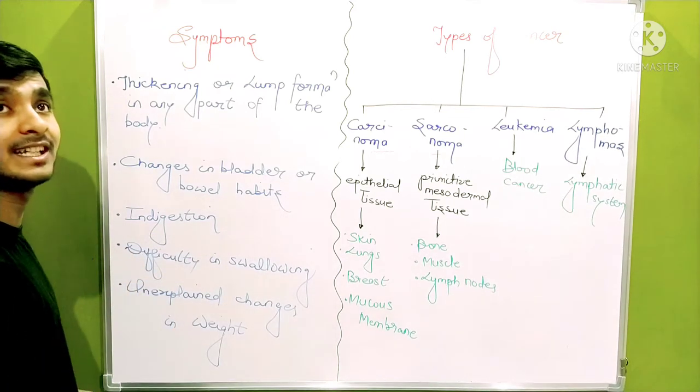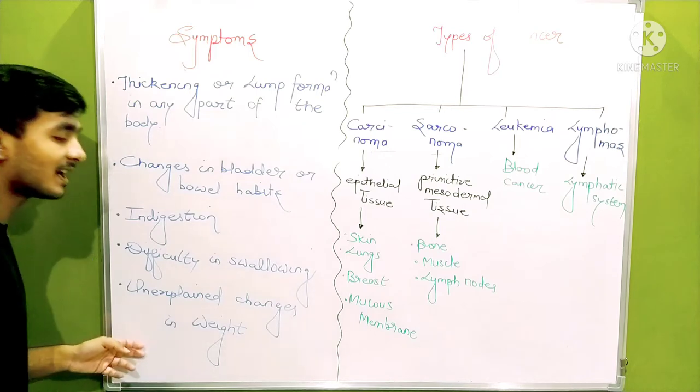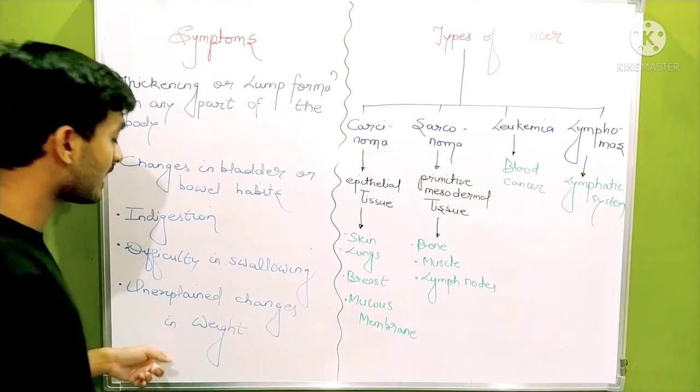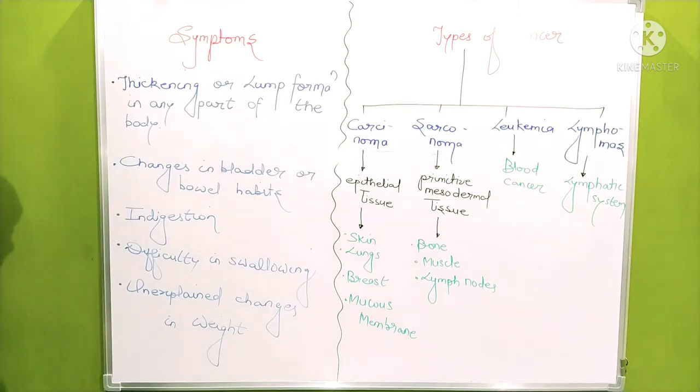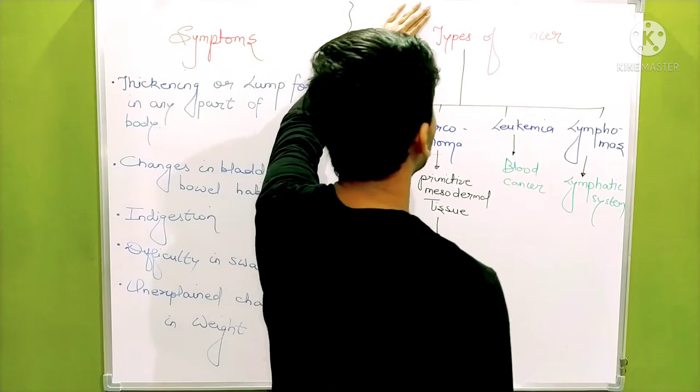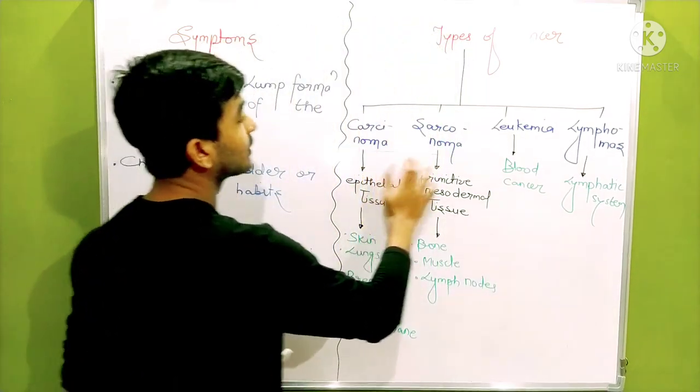There would be difficulty in swallowing the food. Then unexplained changes in the weight - the weight changes drastically. Weight decreases very fast without any reason. Now get across the types. The types are generally four types.